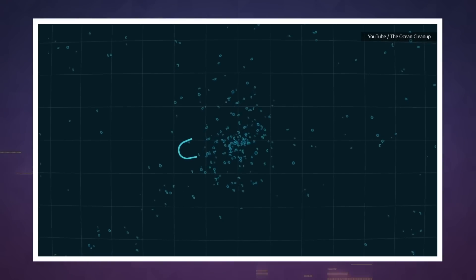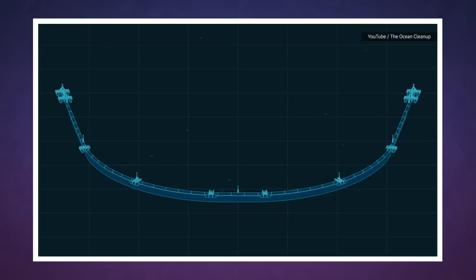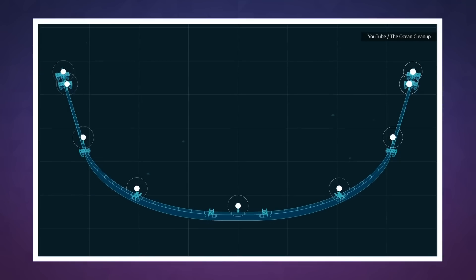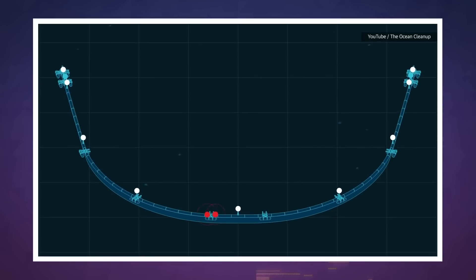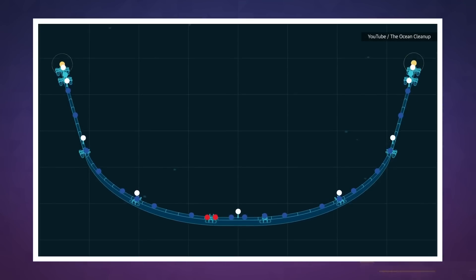However, the group hopes that by deploying 60 more systems, they can remove about 50% of the Pacific Garbage Patch plastic every five years. We'll see you tomorrow with more Engadget Today.